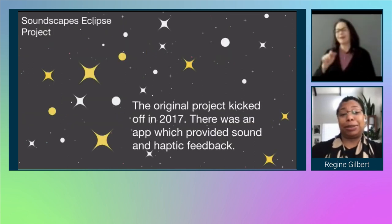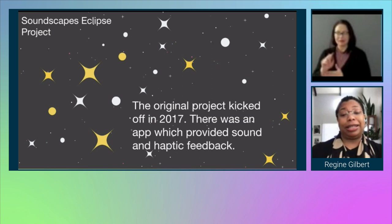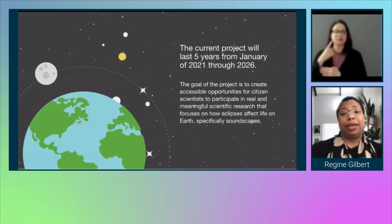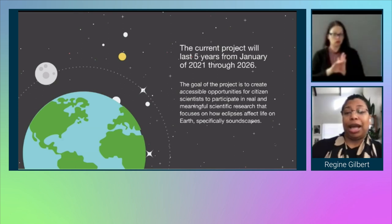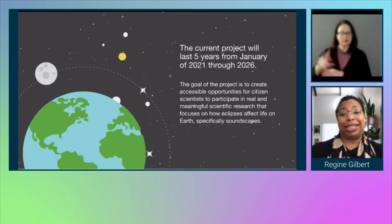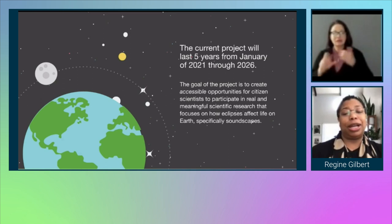The Eclipse Soundscapes project was originally kicked off in 2017 and an app was created, which provided audio in iPhones in 2017. It featured real-time narration of different aspects of the eclipse for the user's location. The current project will last five years — it started in January 2021 and runs through 2026. The goal of the project is to create accessible opportunities for citizen scientists to participate in real and meaningful scientific research that focuses on how an eclipse affects life on Earth, specifically soundscapes.